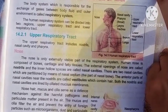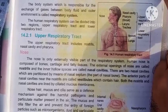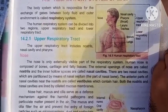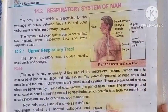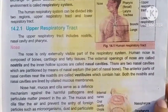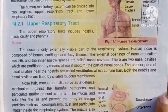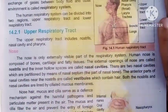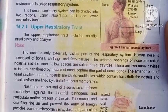The nostrils are also known as the nose. The nose is the only external visible part of the respiratory system. The human nose is composed of bones, cartilage, and fatty tissues. The external openings of the nose are called the nostrils.